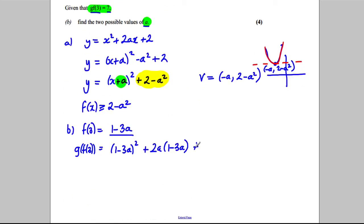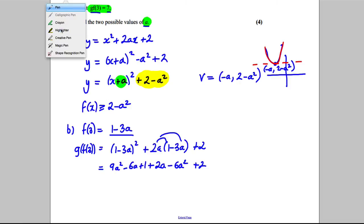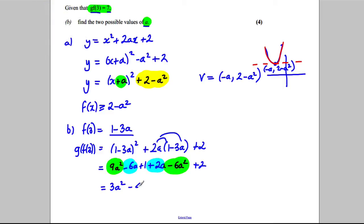Let's expand this bracket. It would expand to 9a squared subtract 6a add 1. This would expand to add 2a subtract 6a squared add 2. Collect like terms: 9a squared take away 6a squared is 3a squared, negative 6a add 2a is negative 4a, and 1 add 2 is 3, so add 3.